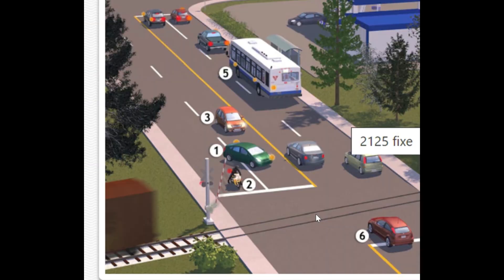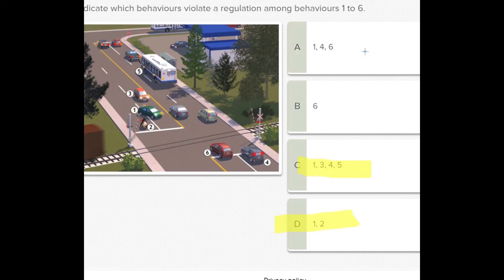Vehicle four is stopped on the line and vehicle number one is crossing a solid line. So choice A is our answer — that was easy!